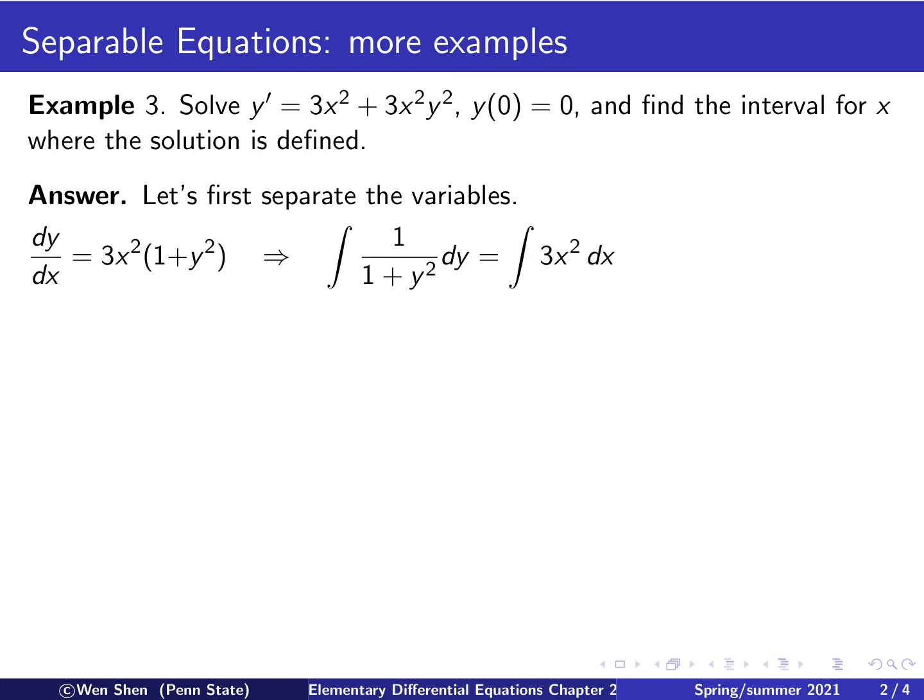We move everything containing y to the left-hand side, and then everything containing x to the right-hand side. And then we integrate. So we see that integral of 1 over 1 plus y squared dy is arctan of y, and 3x squared is x cubed. And then remember to add an arbitrary constant.